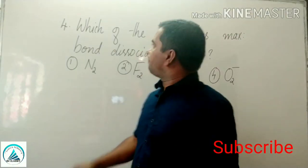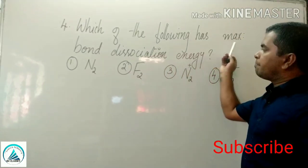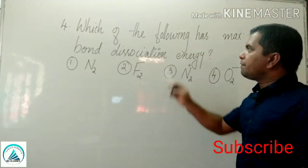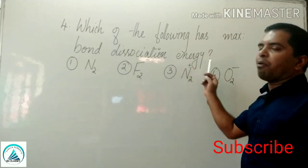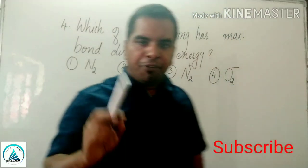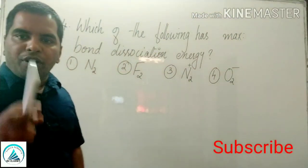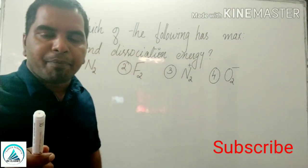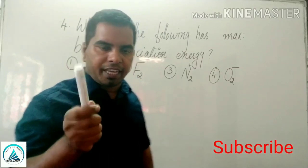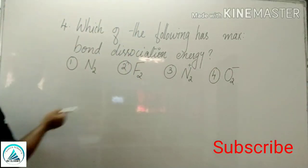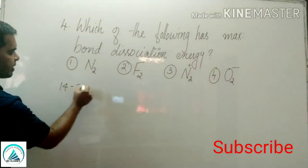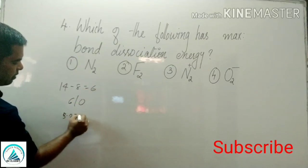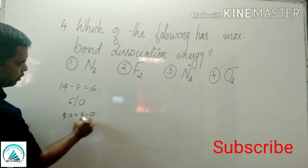Next question: which of the following has maximum bond dissociation energy? Bond order is directly proportional to bond dissociation energy. N2: total number of electrons 14. 14 minus 8 = 6. Bond order = (6 minus 0) divided by 2 = 3.